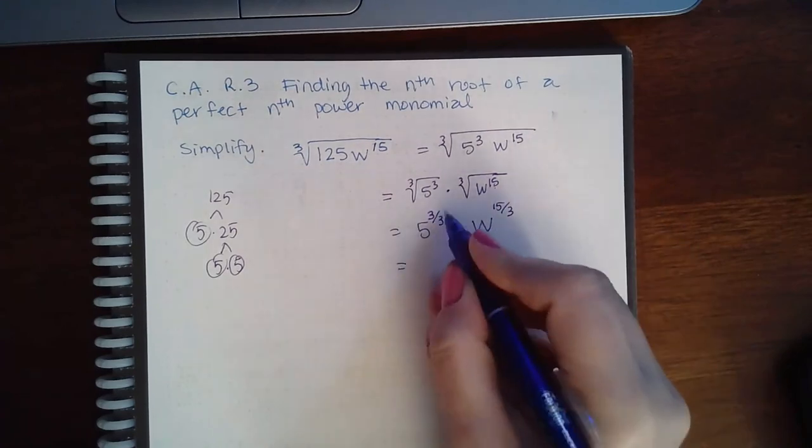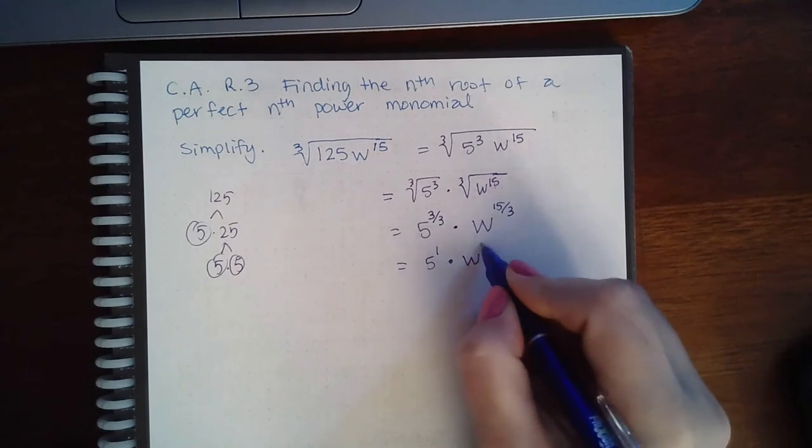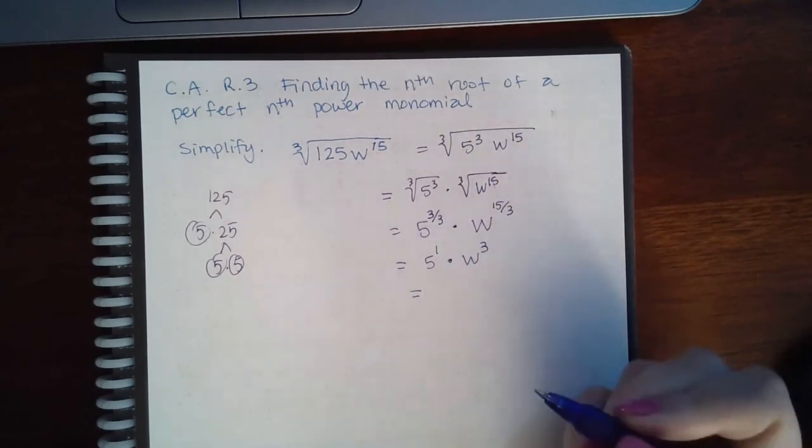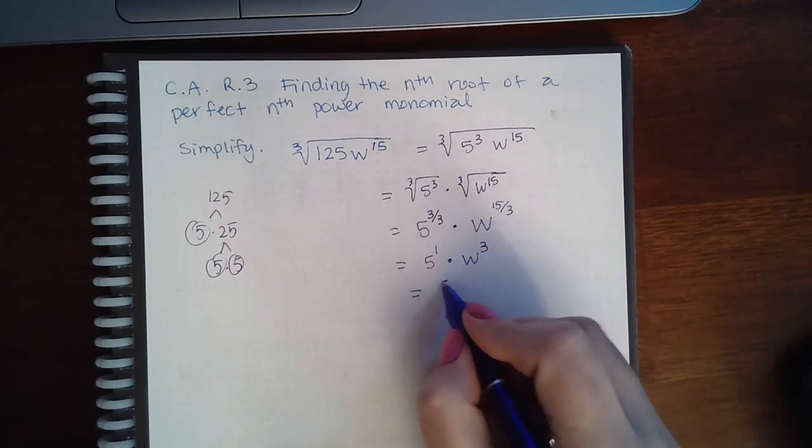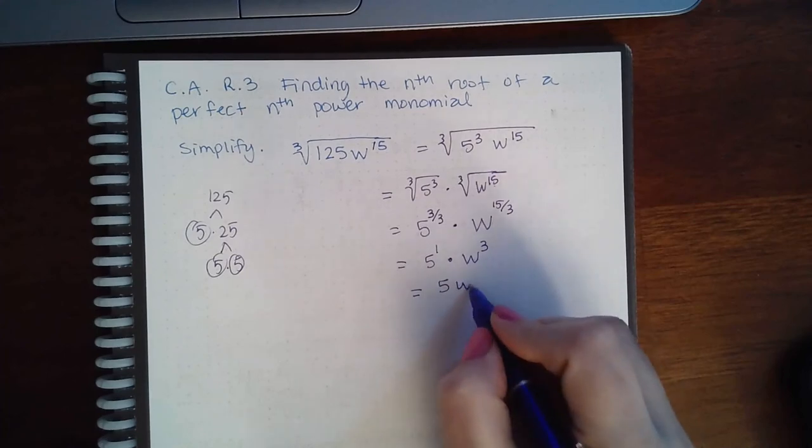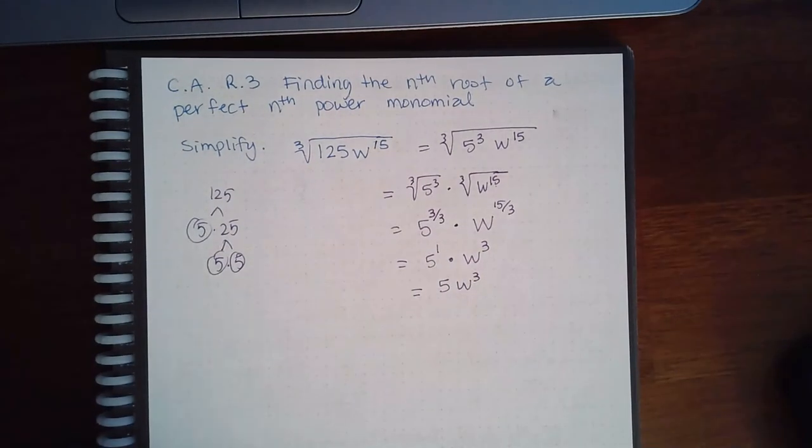Then I reduce: this gives me 5 to the 1, and here I get w to the 3. Then I clean it up: 5 to the 1 is 5, and when I multiply by 3, I don't need to put the dot in the middle. It's already understood when a coefficient is next to a variable.